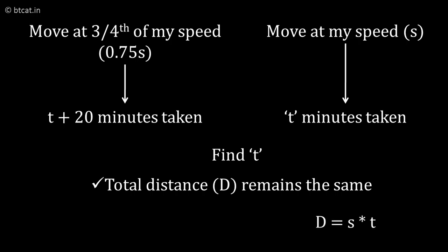the distance is s into t because the original speed is s and the original time is t. But in the next case, the speed has become 3 fourths of s and the time has become t plus 20 because I am getting late by 20 minutes.